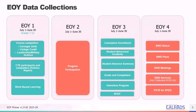EOY 2 contains program participation information that is submitted in student program or SPRG files. EOY 3 contains information on cumulative enrollment, student behavioral incidents, the student absence summary, graduates and completers, homeless youth, and students who take the summative ELPAC and test as RFEP. EOY 3 contains the student incident, student incident results, student offense, and student absence summary file types.